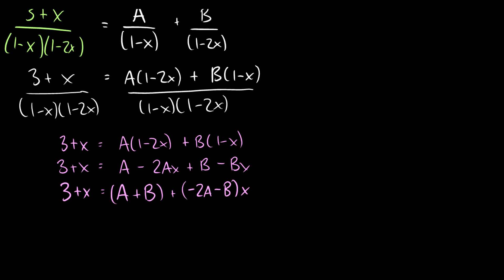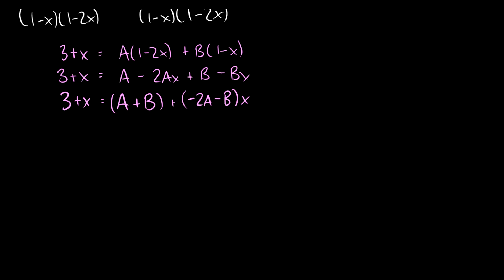And now we know a couple things here. We know that A plus B has to equal 3, because A plus B is the constant on the right and 3 is the constant on the left. We also know that negative 2A minus B has to equal 1, because the coefficient of the x is 1. So using whatever method you like to solve it, you can use a matrix if you want, or just add these up. We're going to solve for A.